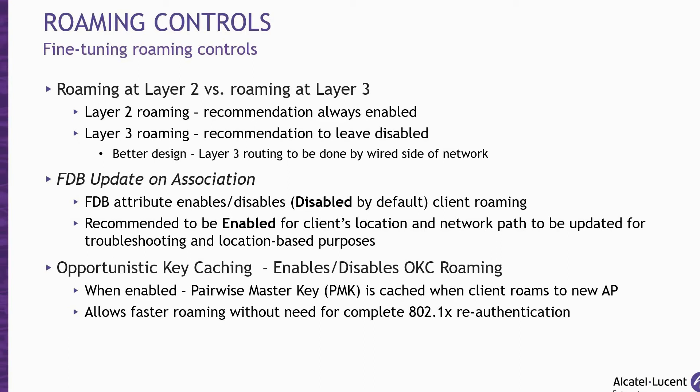You may be asking what the forwarding database update and association attribute has to do with roaming. When a client roams to a new AP and this attribute is enabled, the new associated AP will send ARP packets to the uplink switch to notify the switch to change the downstream forwarding port for the wireless client traffic. Therefore, to keep the client's location and network path updated for troubleshooting and location-based purposes, this parameter should be enabled. The Opportunistic Key Cache (OKC) is also related to roaming. When enabled, it triggers a cached pairwise primary key to be used when the client roams to a new AP, which also helps with sticky client avoidance.